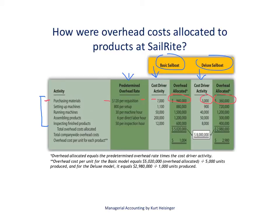We do the same calculation for the next four activities. When we add up all overhead costs, the basic sailboat has $5,020,000 in overhead charged, and the deluxe sailboat has $2,980,000 in overhead charged. Those two amounts add up to $8 million dollars. Assuming no under-applied or over-applied overhead, the total overhead allocated to both products equals $8 million dollars.